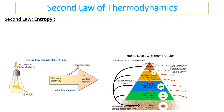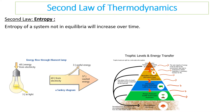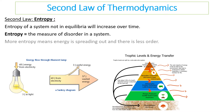The second law of thermodynamics links to entropy. The entropy of a system not in equilibrium will increase over time. Essentially, entropy is a measure of the disorder in a system — more entropy means energy is spreading out and there is less order.